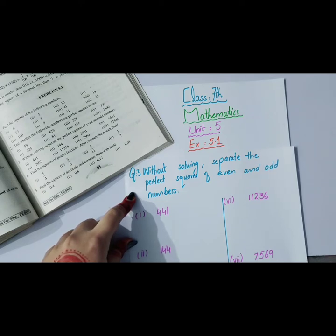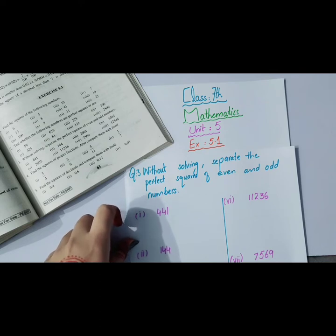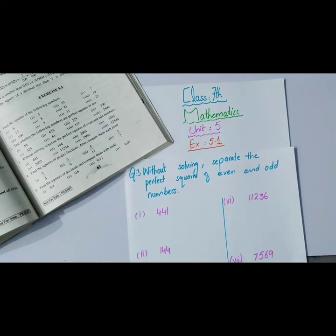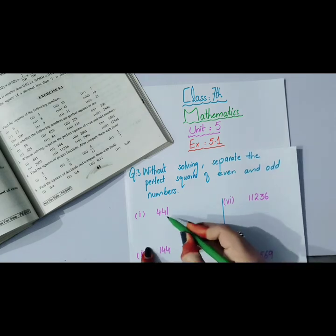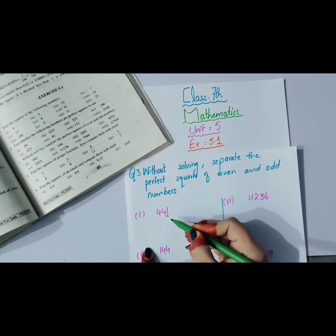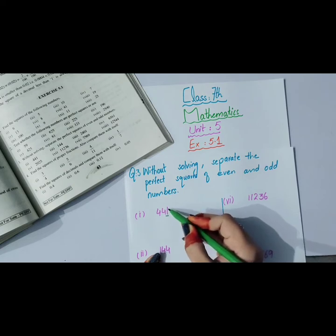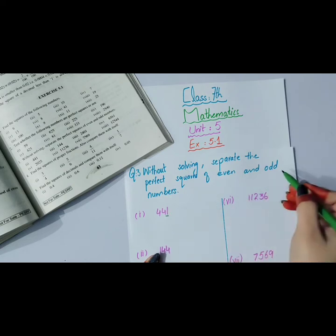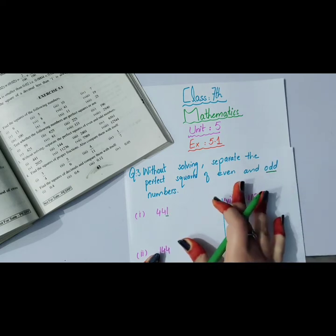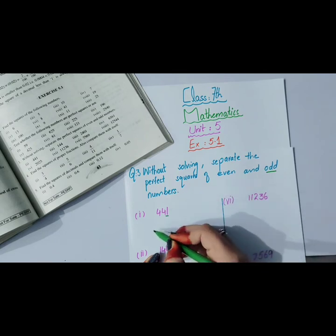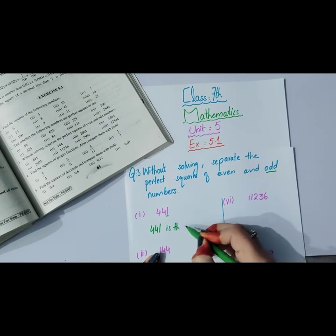First part of question number 3: 441. We just discussed that the last number tells us if it belongs to even or odd family. One is odd, so 441 is the square of an odd number.